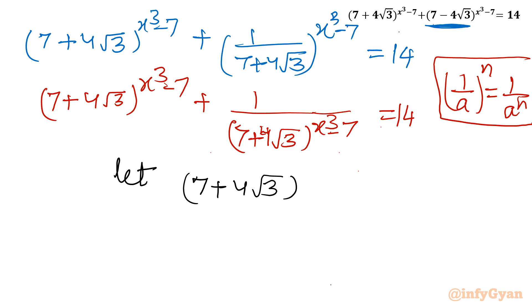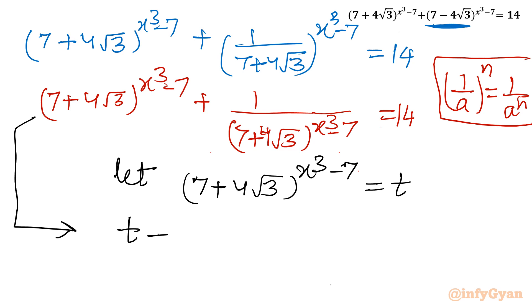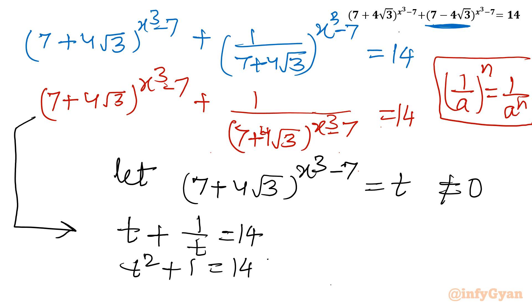Let us use substitution: let t equal (7 + 4√3)^(x³ - 7). So our equation becomes t + 1/t = 14, where t cannot be 0. Multiplying through by t gives t² + 1 = 14t. Taking all terms to the left-hand side, the quadratic becomes t² - 14t + 1 = 0.